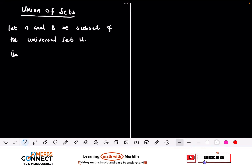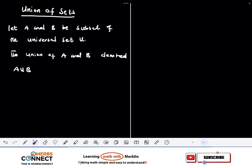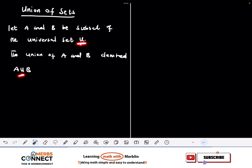We can say that the union of A and B is denoted by A union B. This is how we are going to write it — A union B. Note that this is different from the universal set U. The union symbol and the big U look almost the same, so pay attention to the distinction.